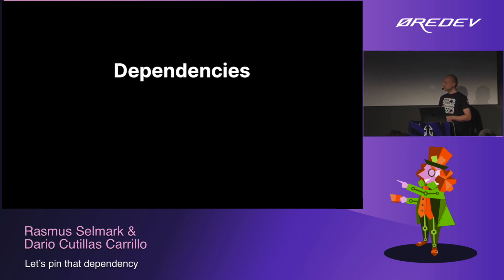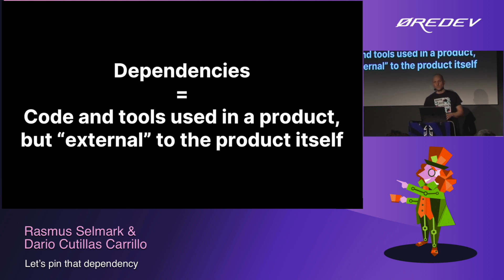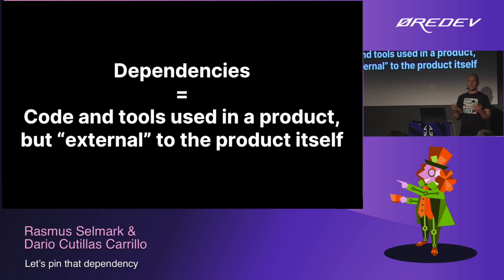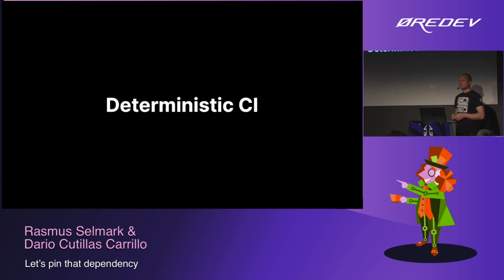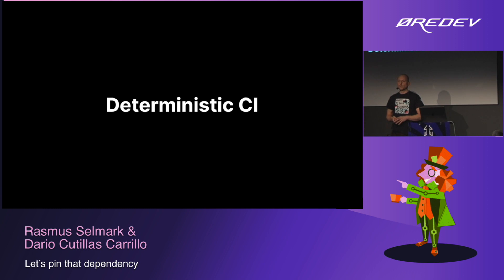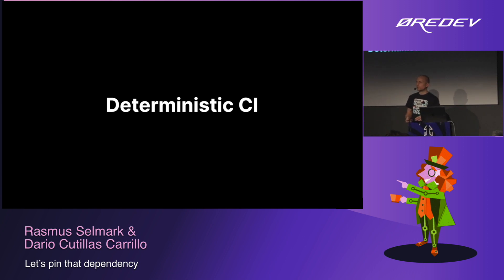When we talk about dependencies, in this case we mean code and tools used in a product but external to the product itself. The important part is that it can be more than just NPM packages or libraries — it's actually also the tools that are part of our CI. It's very closely related to dependency management in our CI processes. And the important aspect of that is deterministic CI — actually making sure that we are able to produce reliable, the same results, even at a later point from a given revision.